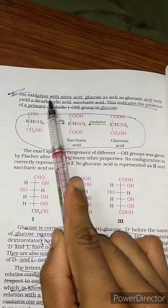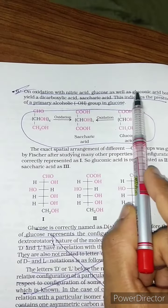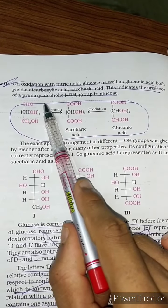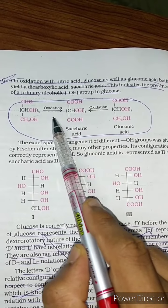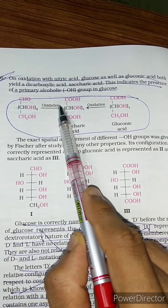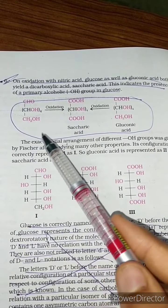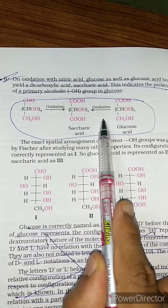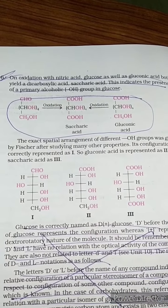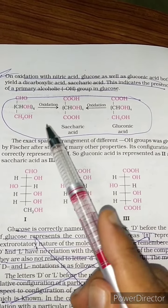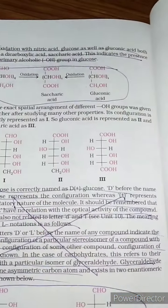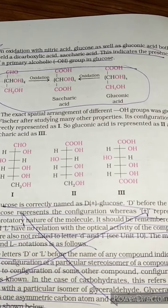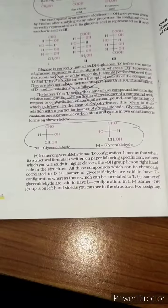On oxidation with nitric acid, glucose as well as gluconic acid both yield saccharic acid, a dicarboxylic acid. This indicates the presence of a primary alcohol OH group in glucose. All these reactions collectively provide proof of the aldehyde carbonyl group and OH groups present in glucose.